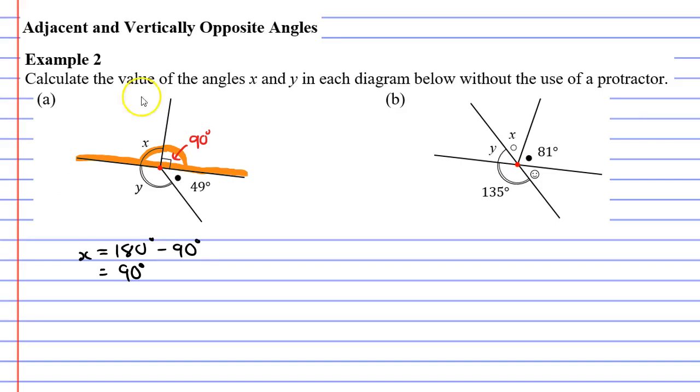Now let's look at Y. Once again, we've got a nice straight line at the bottom, and we've got two angles that must add up to 180 degrees. So Y must be 180 degrees minus 49 degrees. That means it's going to equal 131 degrees.